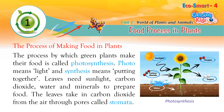The process by which green plants make their food is called photosynthesis. 'Photo' means light and 'synthesis' means putting together. Leaves need sunlight, carbon dioxide, water and minerals to prepare food.